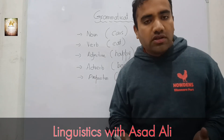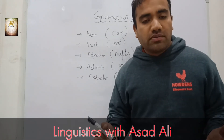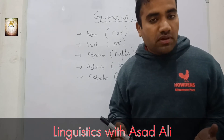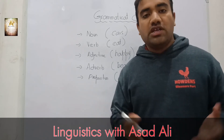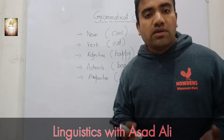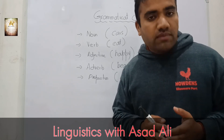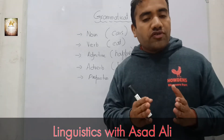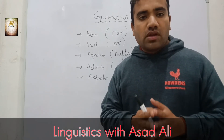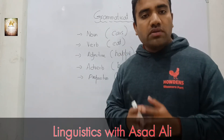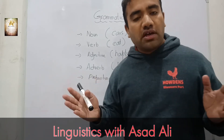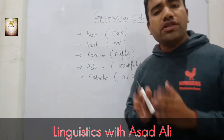The fifth grammatical category is preposition. Preposition basically tells us the location. When we say my book is on the table, 'on' in this sentence tells us the location. When we say the ball is under the table, 'under' tells us the location of that ball. Preposition basically tells us the location in every language.